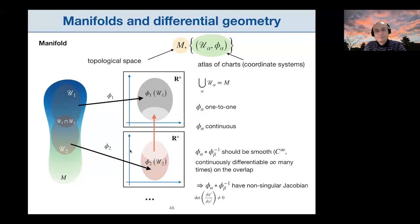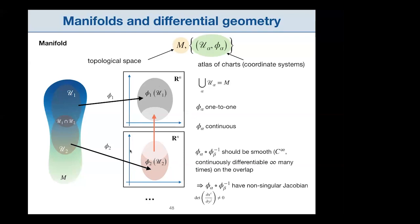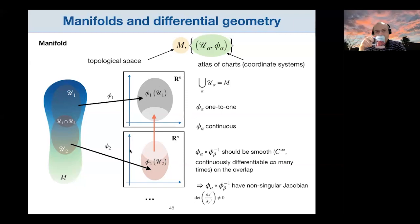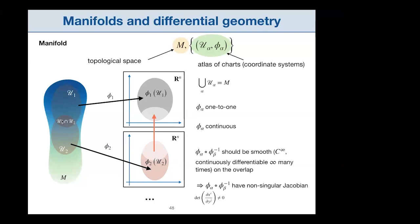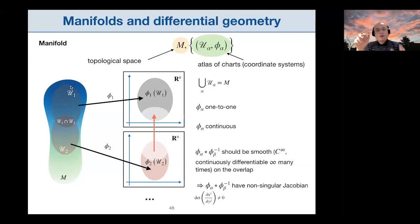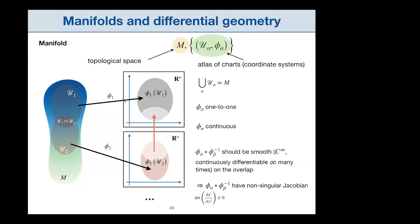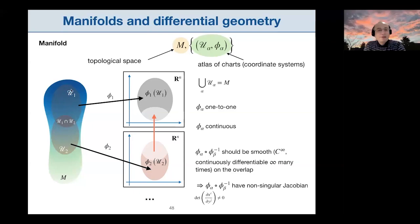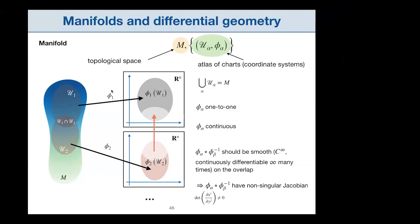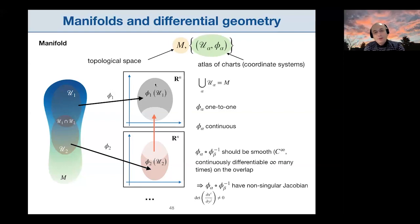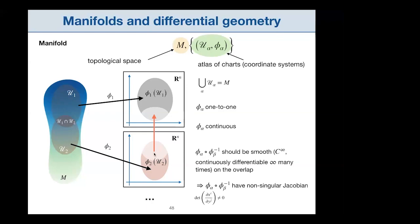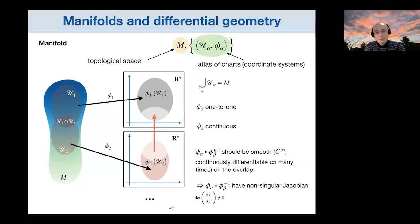Student question: U_alpha is not a coordinate system — it is a subset of the manifold on which the coordinate system lives. Phi1 is an abstract representation of the coordinate system: you take a point and get n numbers. The composition phi2-inverse composed with phi1 is a map giving you the coordinate change — a coordinate transformation.